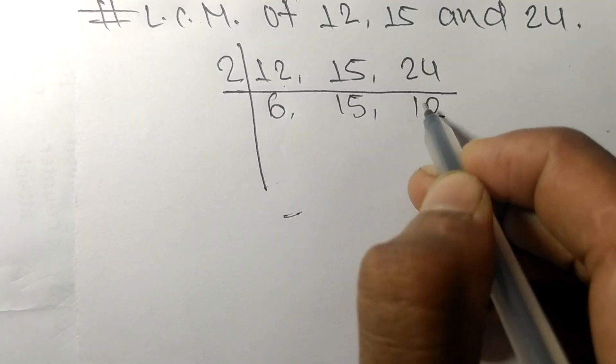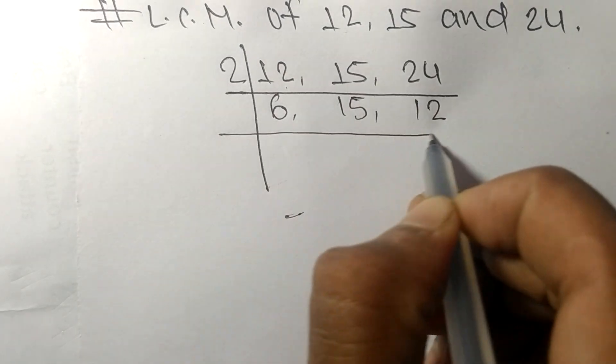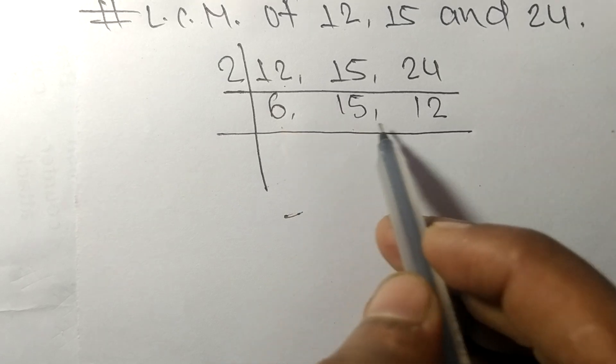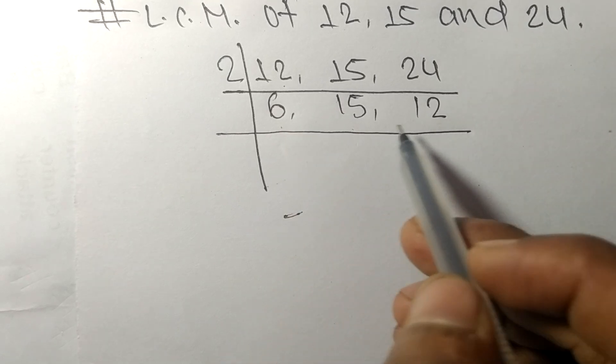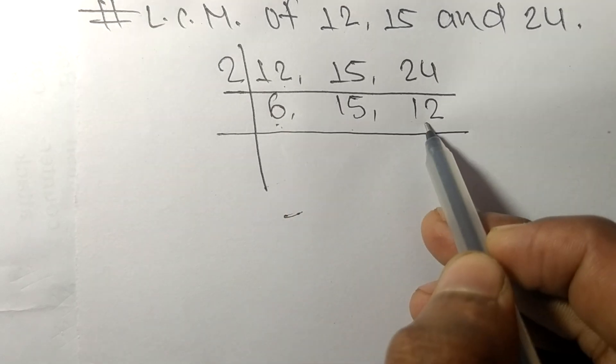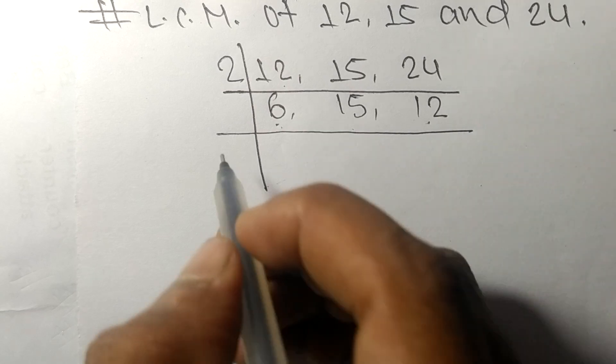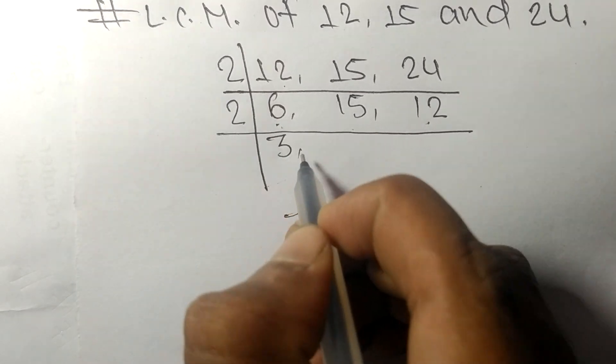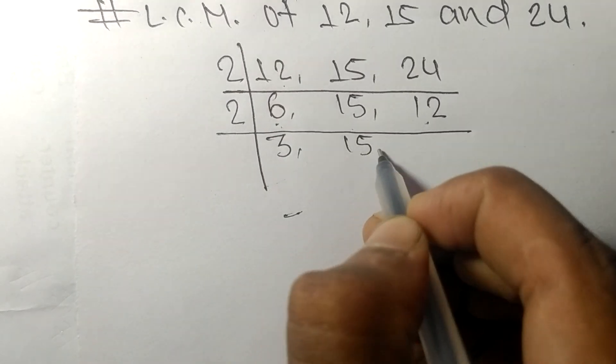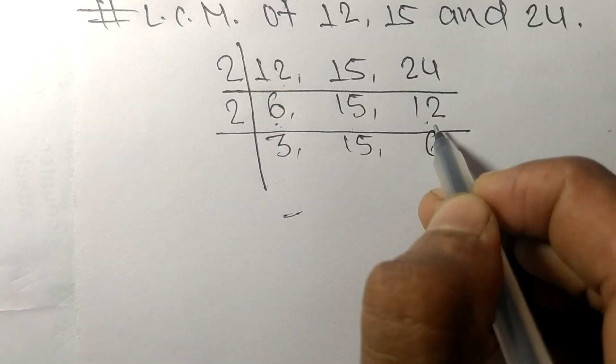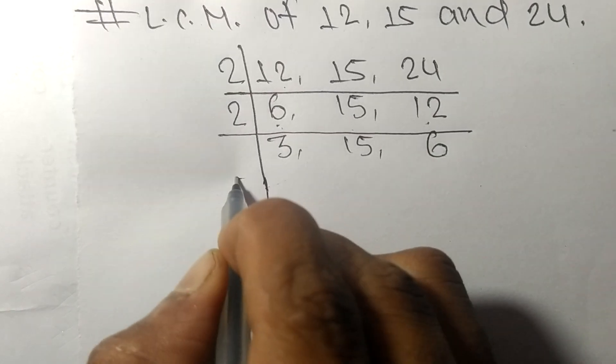So now we got 6, 15, and 12. Among them, 6 and 12 are exactly divisible by 2. 2 times 3 equals 6, 15 stays the same, and 2 times 6 equals 12.